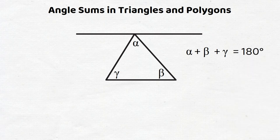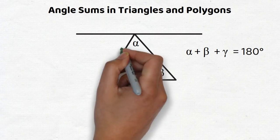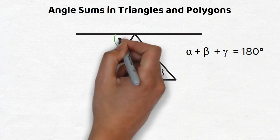To see why this is true, we can start with any triangle and construct a line through one of its endpoints, or vertices, that are parallel to the opposite segment.